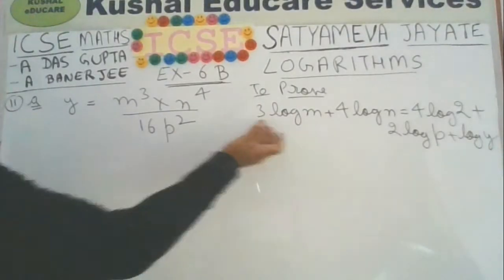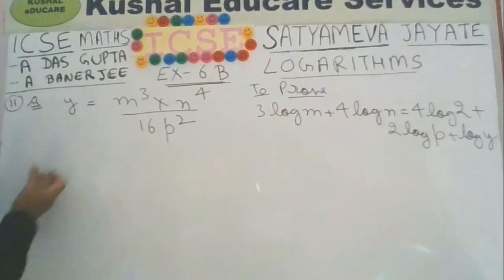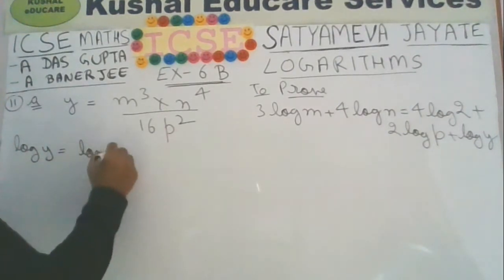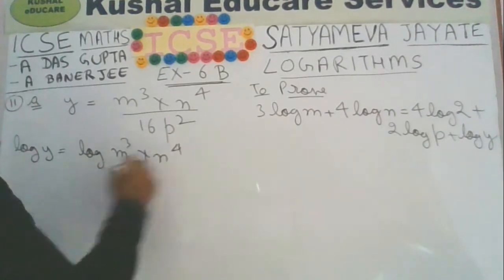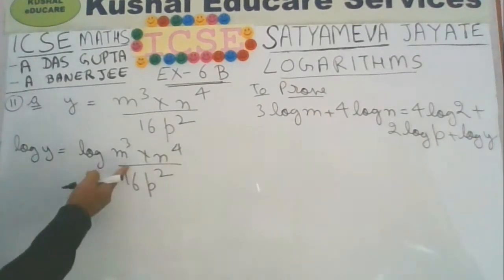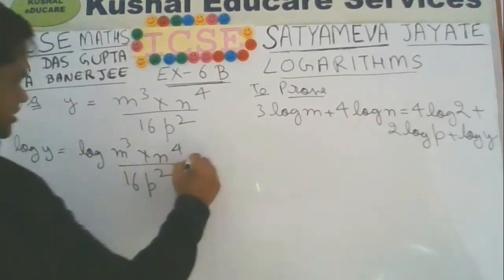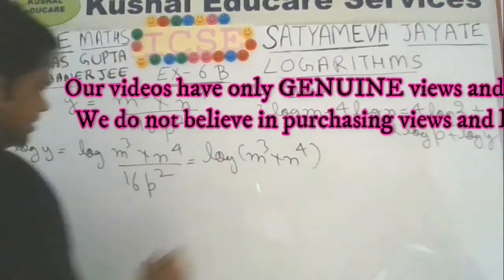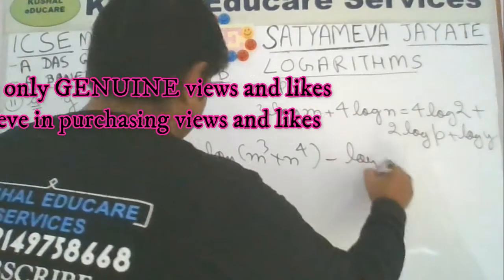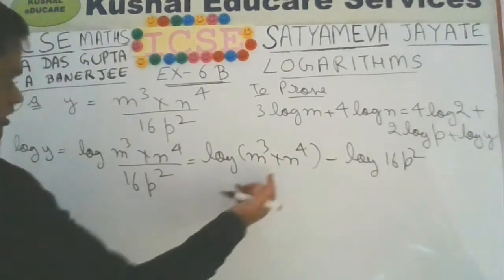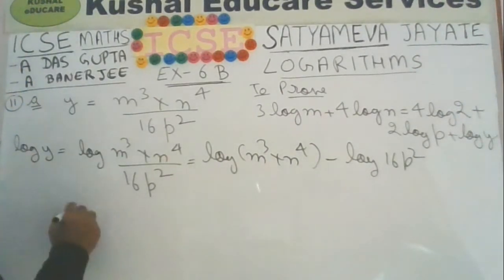We have to prove this equation. Take log on both sides, so you will get log of the left side equal to log of m cubed times n to the power 4 divided by 16p squared. This division will be converted into subtraction: log of m cubed times n to the power 4 minus log of 16p squared.